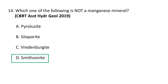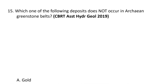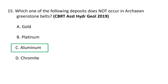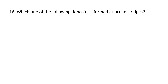Next question: which one of the following deposits does not occur in Archaean greenstone belts? A) Gold, B) Platinum, C) Aluminium, D) Chromite. The deposit which does not occur in Archaean greenstone belts is aluminium, whereas gold, platinum, and chromite are seen in Archaean greenstone belts. C, aluminium, is the correct option.